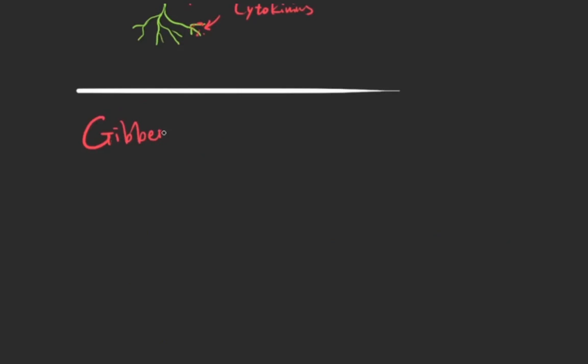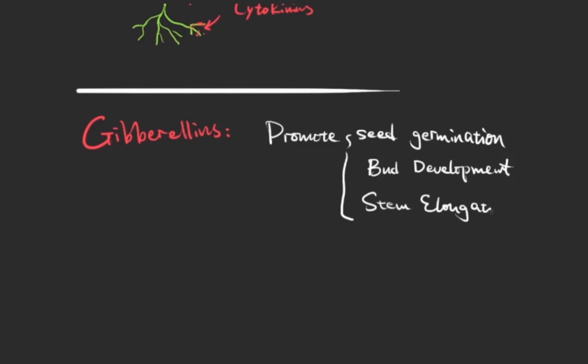Now let's talk about gibberellins. Gibberellins can promote a plant's seed germination, bud development, stem elongation, and root development. It's in a plant's apical bud, young leaves, and root system. You can say it's like an overall nutrition to a plant and it's everywhere.